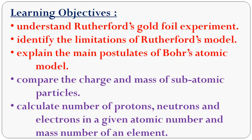Good morning students, welcome back to the next lesson on atomic structure. The learning objectives are: first, understand the Rutherford gold foil experiment — he preferred gold foil because it is the most malleable metal. Next, identify the limitations of Rutherford's atom model. Then explain the main postulates of both atom models, and compare the charge and mass of subatomic particles — protons, neutrons, and electrons. Also calculate the number of protons, neutrons, and electrons using atomic number (symbol Z) and mass number (symbol A).